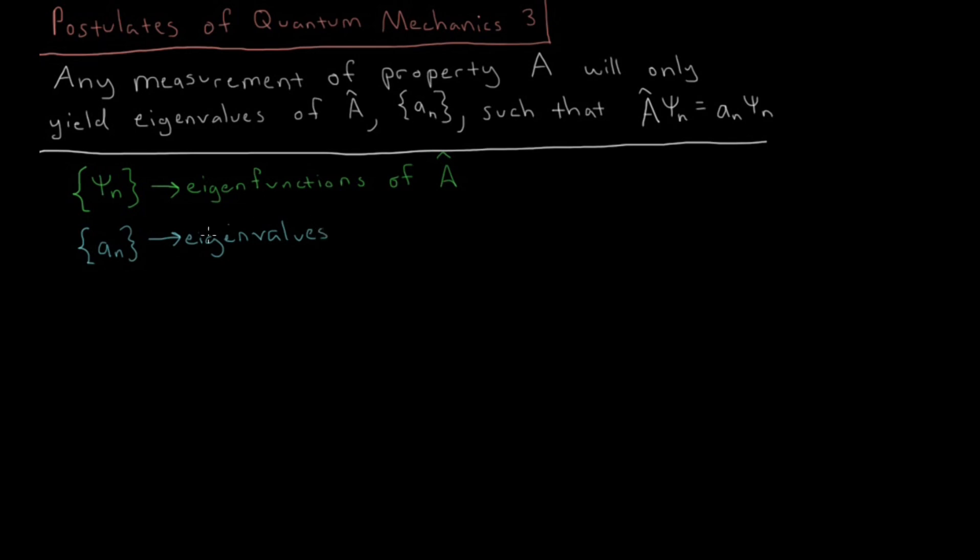And we're going to see an important distinction in a little bit about the difference between the eigenvalues, what you measure, and expectation values, or the average value of a large number of measurements. So just because something is an expectation value for an operator does not mean that you can observe that number in an experiment.